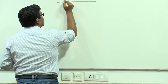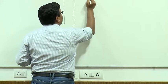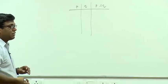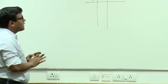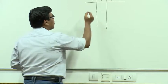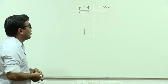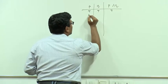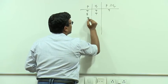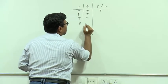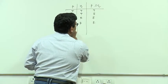For the truth table of a conjunction: given P, Q, and 'P and Q,' the conjunction 'P and Q' is true only when both P and Q are true. Irrespective of whether P is false, or Q is false, or both are false, the conjunction is going to be false.